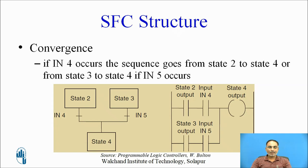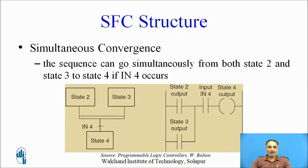We also have convergence. In one example, if input 4 occurs the sequence goes from state 2 to state 4, or if input 5 occurs it goes from state 3 to state 4 — this is selective convergence. There is also simultaneous convergence, in which the sequence can go simultaneously from both state 2 and state 3 to state 4 if input 4 occurs. These are the branching and convergence examples supported in sequential function charts.